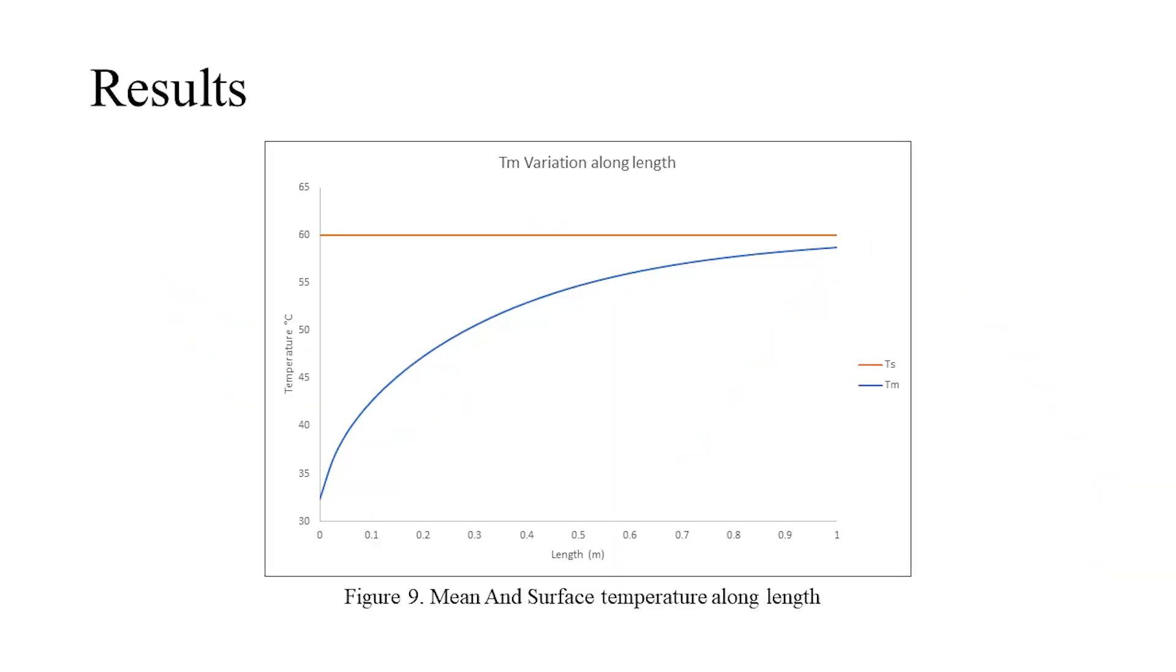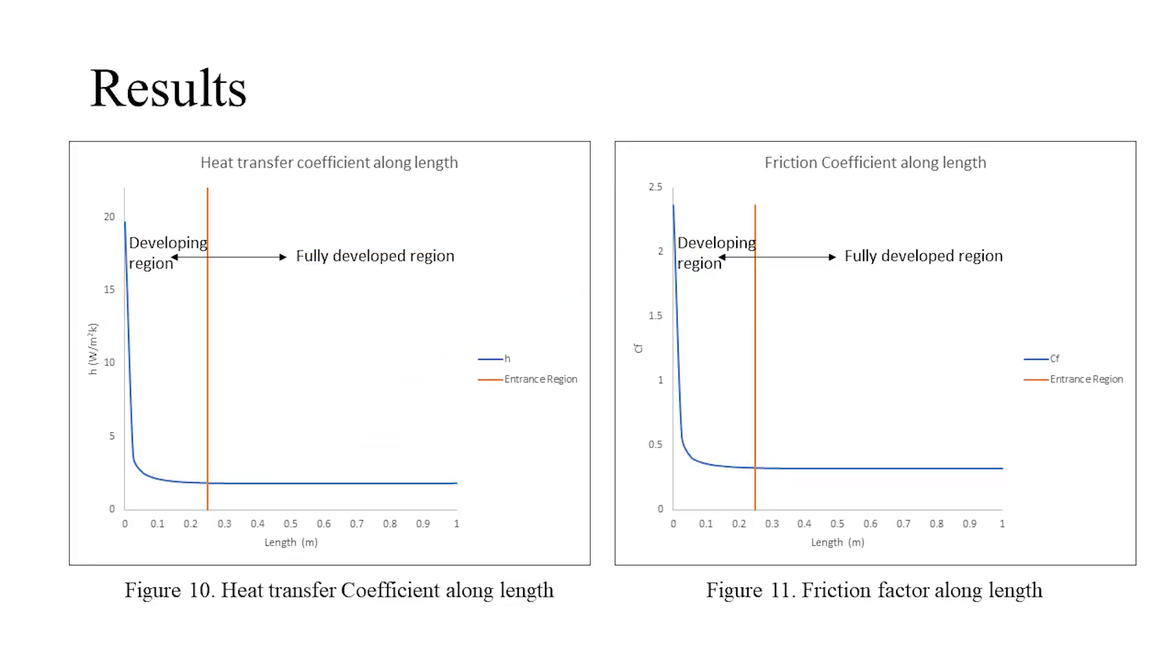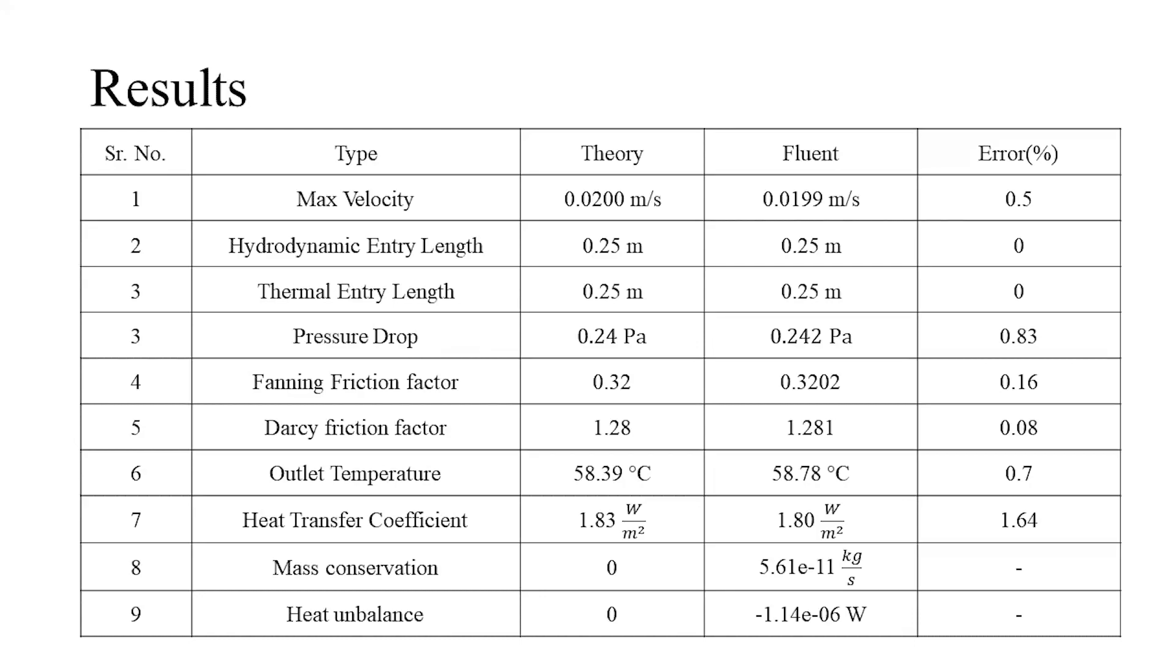Figure number 9 represents the variation of surface temperature and mean temperature along the length of the pipe. And we can observe that the mean temperature varies in exponential fashion. Figure number 10 and 11 represents the variation of heat transfer coefficient and friction factor along the length of the pipe. And we can observe that both stop varying after entry length.